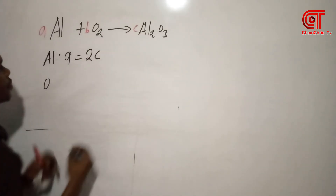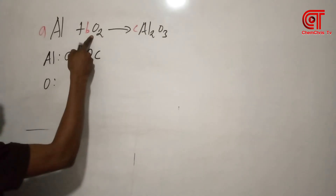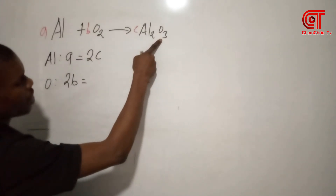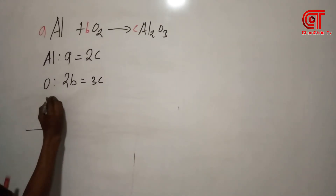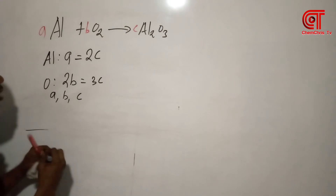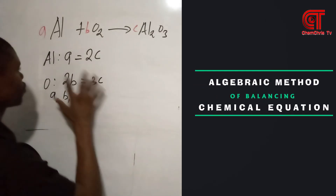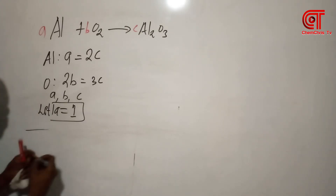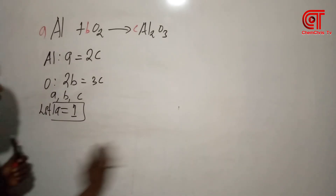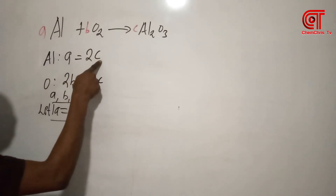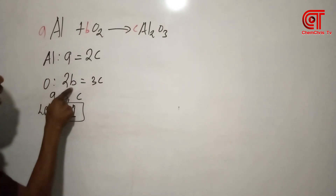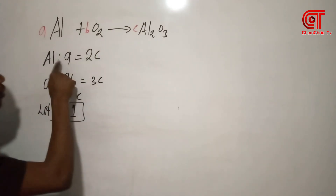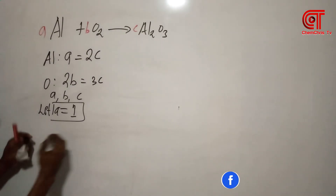For aluminium: there is 1 aluminium on the left, and 2 on the right, so A equals 2C. For oxygen: there are 2 oxygens on the left giving 2B, and 3 on the right giving 3C. So the unknowns to find are A, B, and C. The first thing is to equate the first unknown to 1: let A equal 1. I can calculate C next because C is related to A.